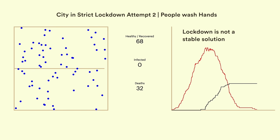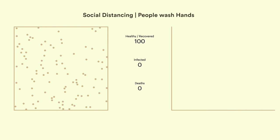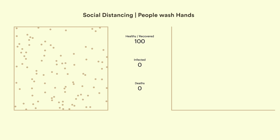Okay, so for our final strategy, let's try the method everyone has been talking about: social distancing. In this case, people stay in their homes and they don't go out as much. Let's remove the lockdown but still ensure that people wash their hands, and let's see what happens.